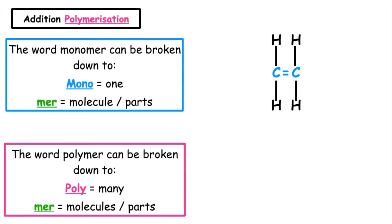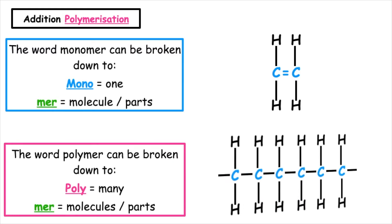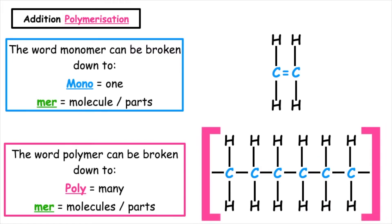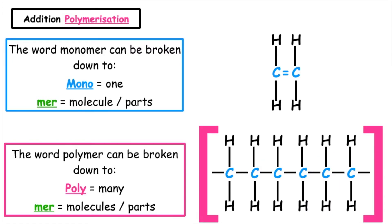The polymer will have carbon-to-carbon single bonds, and we will have to put a square bracket around this as we're just showing a small section of the polymer chain.